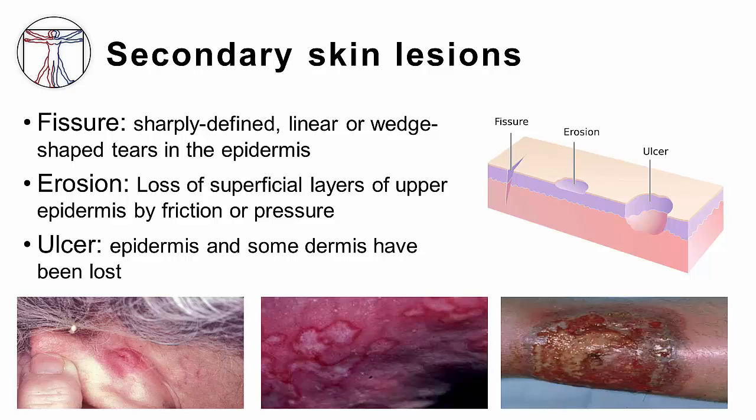Erosions are the loss of superficial layers of epidermis. Like fissures, they may occur in association with repetitive friction or trauma. Erosions may also be formed after a vesicle or pustule has opened and drained, leaving behind the shallow lesions pictured here.